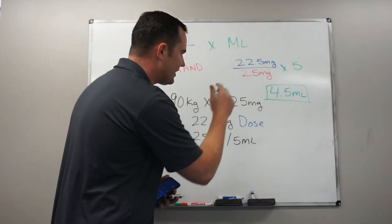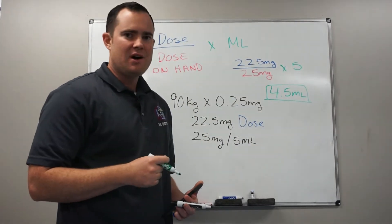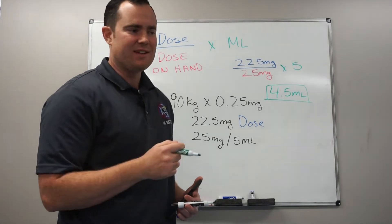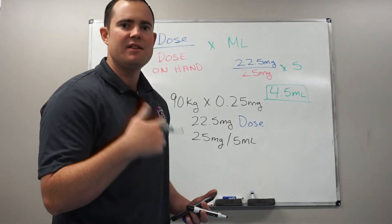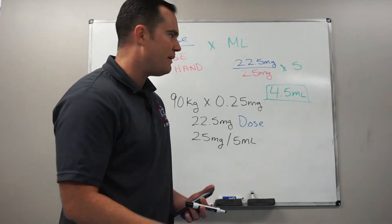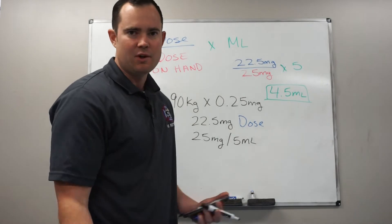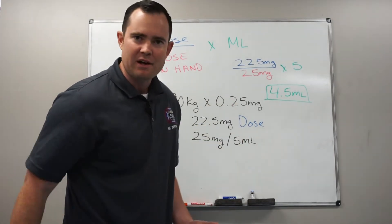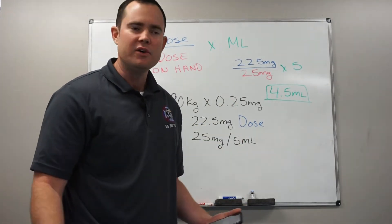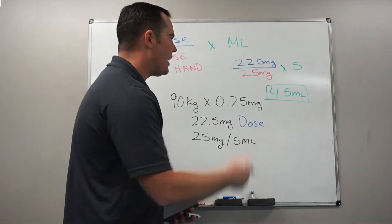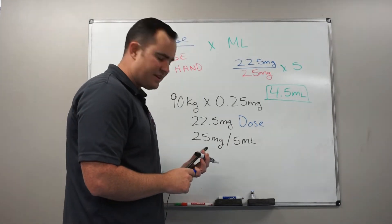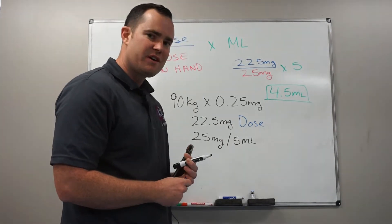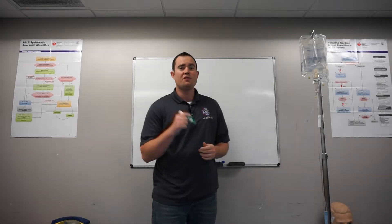When selecting a syringe, you want to select a 5 mL syringe. If you don't have fives, grab a 10. Don't grab a 3 mL or 1 mL — go with a 5 or a 10. That covers the first formula.